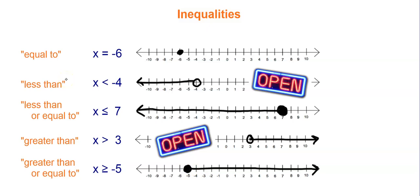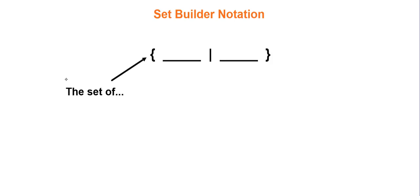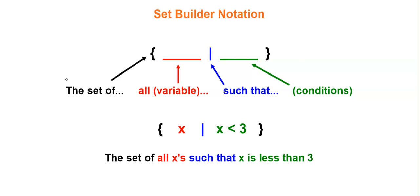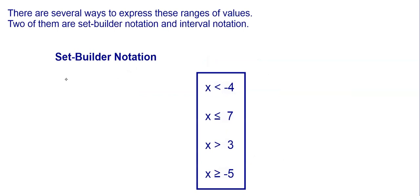There are a couple ways to write these inequalities more formally. The first is called set builder notation. With set builder notation you have curly braces, your variable comes first, then a vertical line which means 'such that', and then the conditions. For example: the set of all x's such that x is less than 3. It's really simple if you understand inequalities.